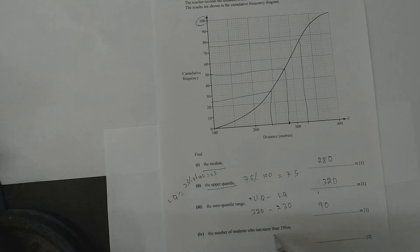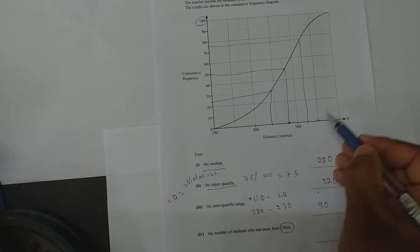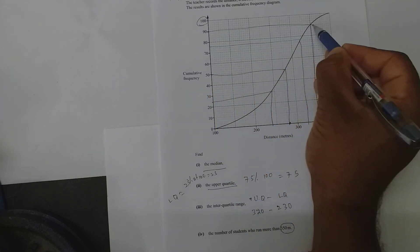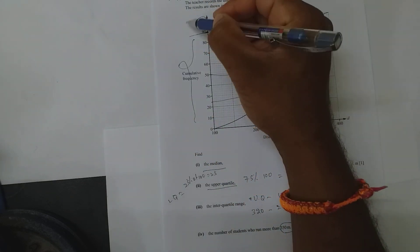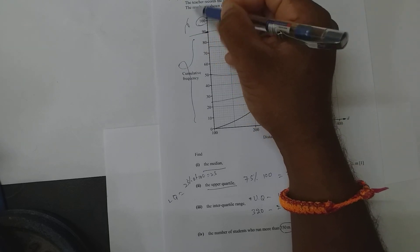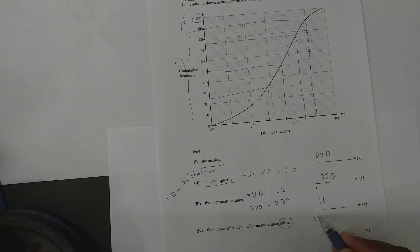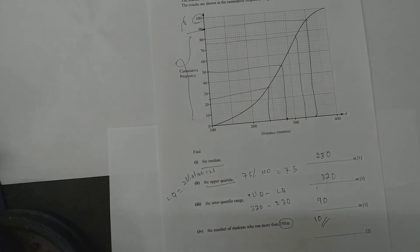For the number of students who run more than 350 metres: 350 is on the x-axis, draw a line there. That gives 90 students below 350 metres, so above 350 metres there are 100 - 90 = 10 students. That is the answer.